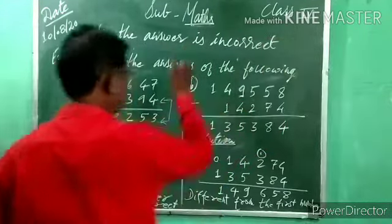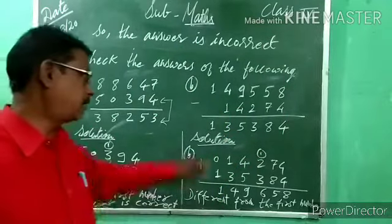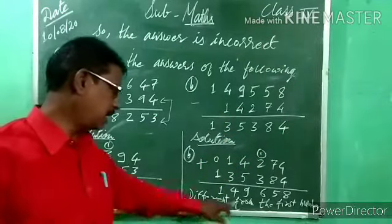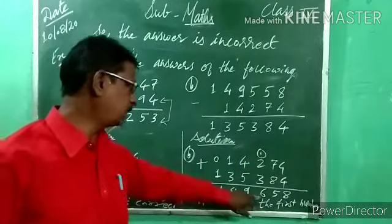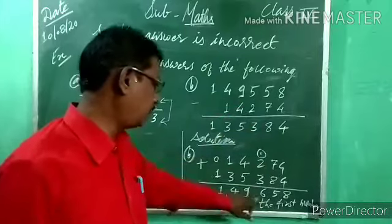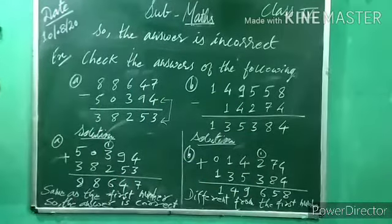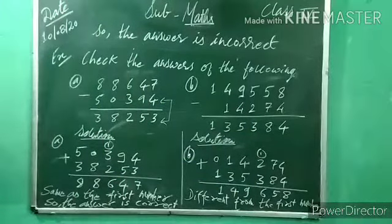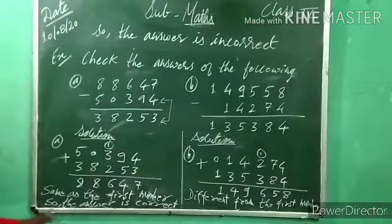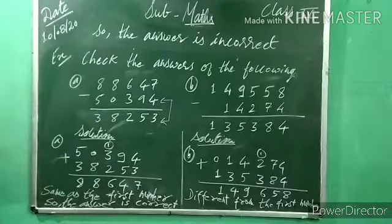Different ayah — pahela wala answer nahi ayah. Question mein yahan par 5 hai, aur hamare answer mein aa raha hai 6 — it's different from the first number, so the answer is incorrect. So understood? Note down this one.